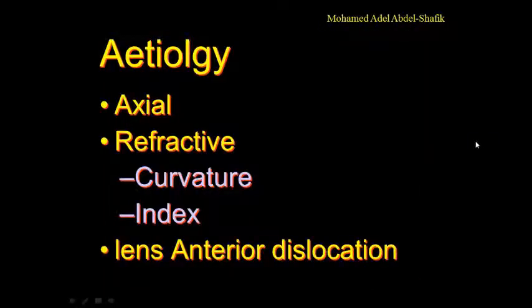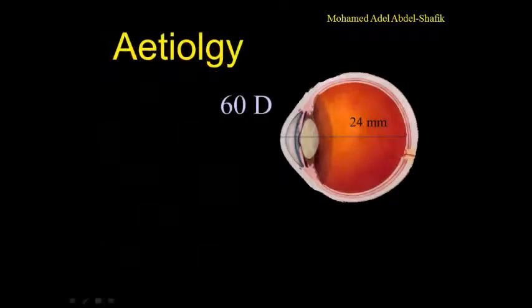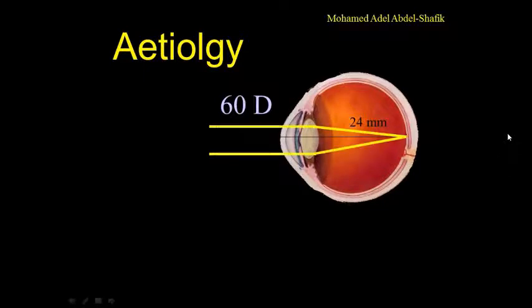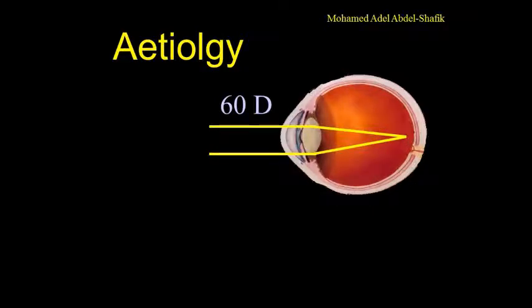Etiology can be due to axial, refractive, or anterior dislocation of the lens. The emmetropic eye has an axial length of 24 millimeters and a power of plus 60. This is suitable to get the image onto the retina. But if the eye is longer with the same 60, the focus will be in the vitreous cavity in front of the retina. This is known as axial myopia.